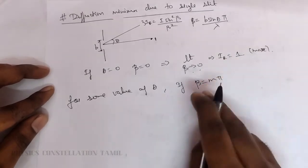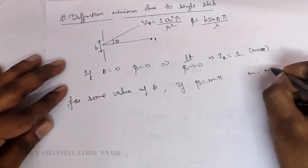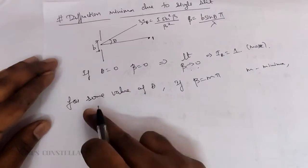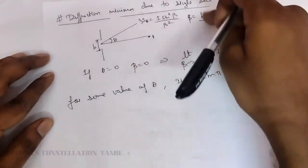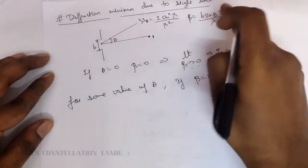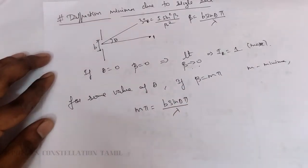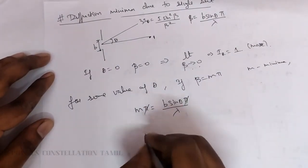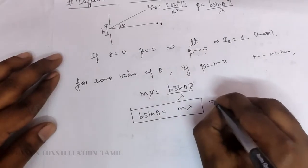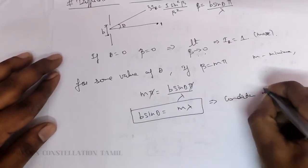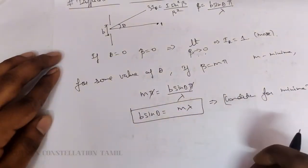For some value of theta, if beta equals m times pi — where m is an integer — we get minima. We can write: beta equals m pi. Since beta equals B sine theta times pi divided by lambda, substituting gives B sine theta times pi divided by lambda equals m pi. The pi cancels, giving the condition for minima: B sine theta equals m times lambda.